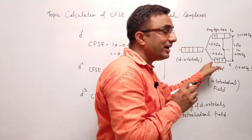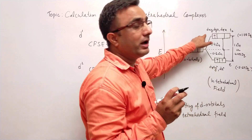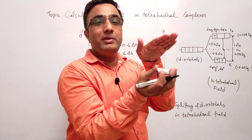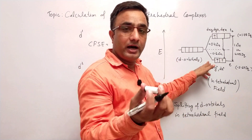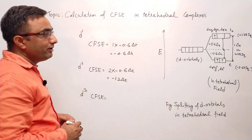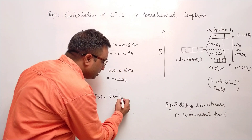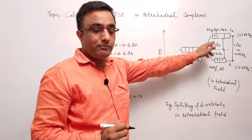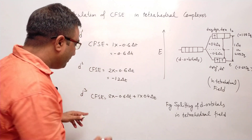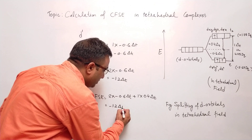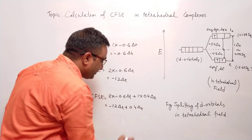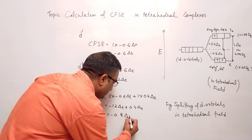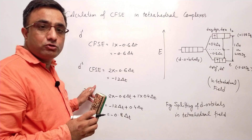You should not add the third electron in the lower set of orbitals. In tetrahedral complexes, the third electron goes to the higher energy level because the crystal field splitting gap is very low, so the energy required to promote the electron from lower to higher energy level is less than the pairing energy. Two electrons in the lower energy level: 2 × (−0.6 delta T), plus one electron in the higher energy level: 1 × (+0.4 delta T), gives −1.2 + 0.4 = minus 0.8 delta T. This is the CFSE for D3 tetrahedral complex.